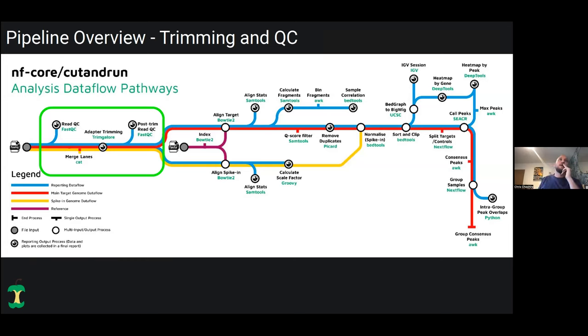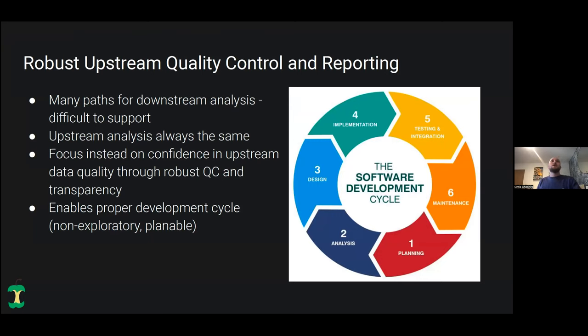The next stage is trimming and initial quality control, as well as merging of samples. This is standard for genomic pipelines — Illumina sequencing requires adapters that need to be trimmed, and you need QC before and afterwards. I wanted to touch on the design principles of the pipeline: there are many paths for downstream analysis in genomics, but the upstream analysis up to a critical point is always the same.